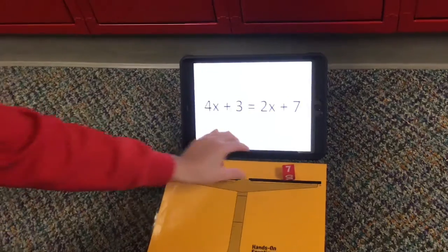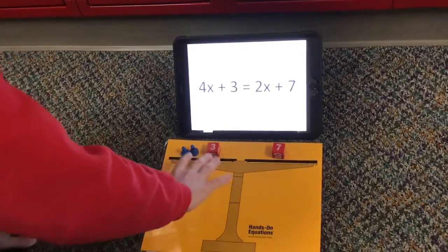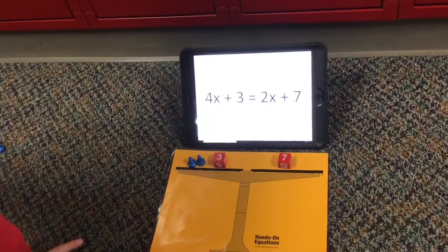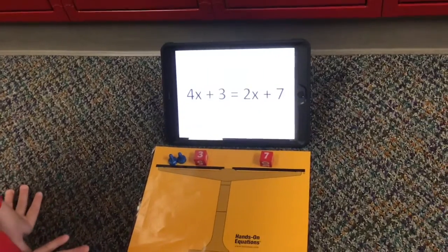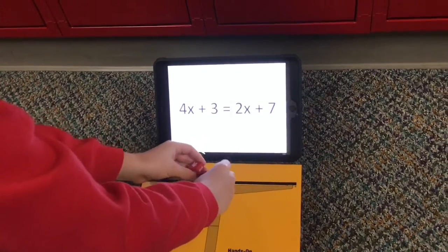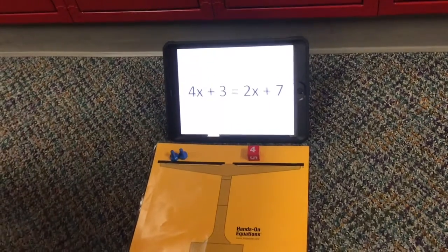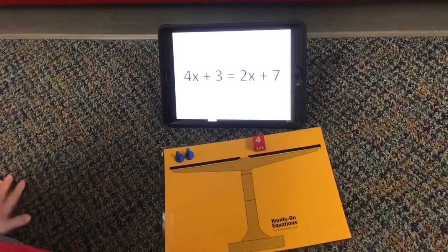And now we have to get rid of this three on the side so we have something to even out on the scale so we can get our answer. So now we have to take away the three from the seven. But since they're on each side, we can take away the three from the seven because we need to balance out our scale.